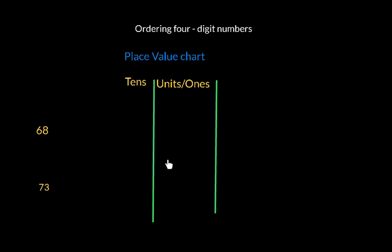Let's get started. We've got 68 here. 68 is just made up of six tens and eight units, and 73 is made up of seven tens and three units.